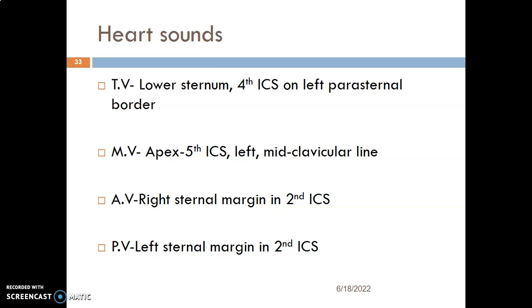Then the aortic valve — where do you auscultate for its heart sound? It's at the second intercostal space, right parasternal margin, right margin of the sternum, second intercostal space, which is below the second rib. Remember, the second rib is at the sternal angle at the manubriosternal junction.